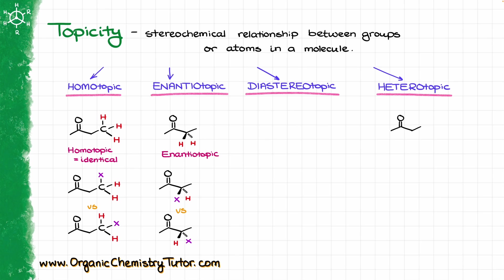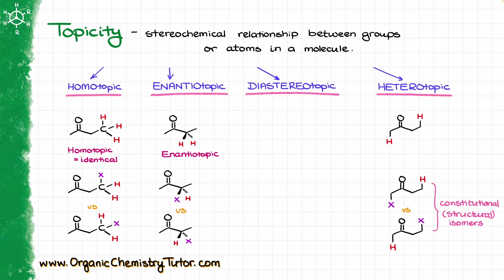Now let's look at my starting material again, but this time I'm going to look at these two hydrogens. Doing our common trick with the replacement with an X, I am now going to end up with these two molecules. If we look closely, in this case the connectivity between our atoms is not even the same. From the relationship perspective, these two are constitutional or structural isomers. And since there is no stereochemical relationship between them, we are going to call these hydrogens heterotopic. Heterotopic always means there is no stereochemical relationship between our atoms or groups of interest.